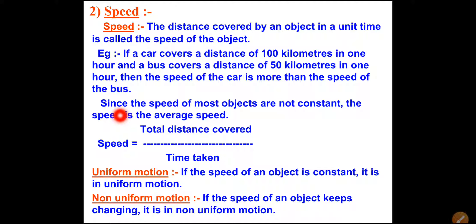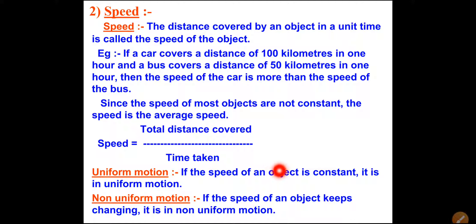Since the speed of most objects is not constant, we use average speed. If a car is running on a road, sometimes it runs with high speed and sometimes its speed is slow, so the speed is not constant and average speed is calculated. Uniform motion is when the speed of an object is constant - not changing. Non-uniform motion is when the speed of the object keeps on changing, sometimes more and sometimes less.